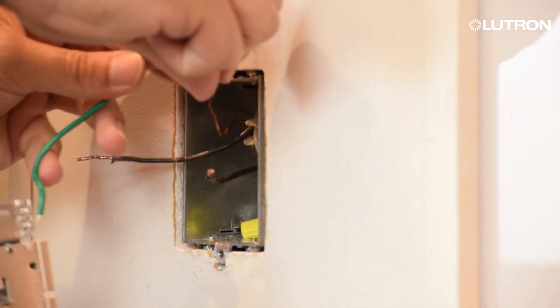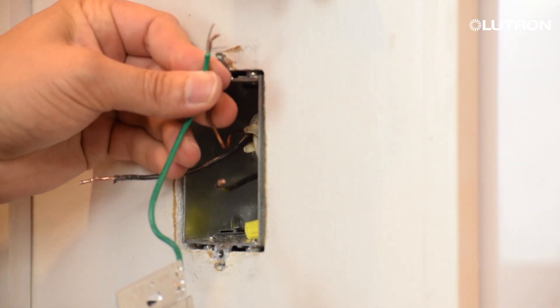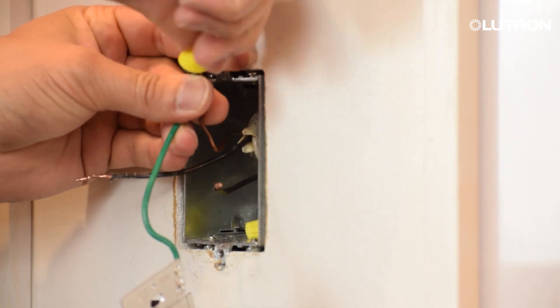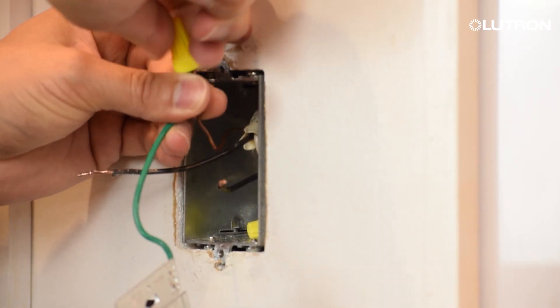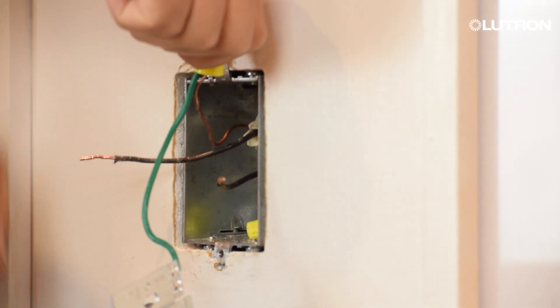Next, connect the green wire from the bottom of the device to the ground wire in the wall with the yellow wire nut. The ground wire in the wall will either be bare copper or green in color.